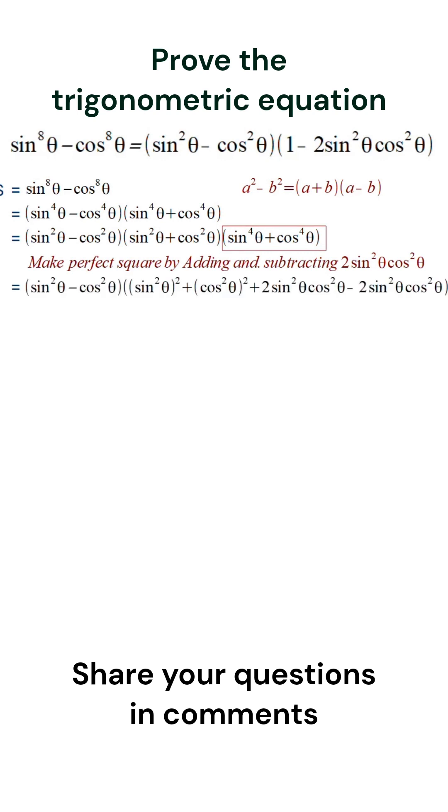So we add and subtract the terms 2sin²θcos²θ in the last term and make a perfect square. Again here we see that there is a sin²θ + cos²θ which can become 1. Then we will be left with the answer the same as right hand side.